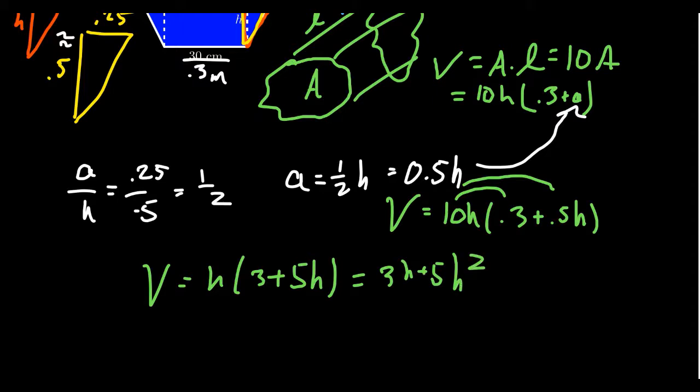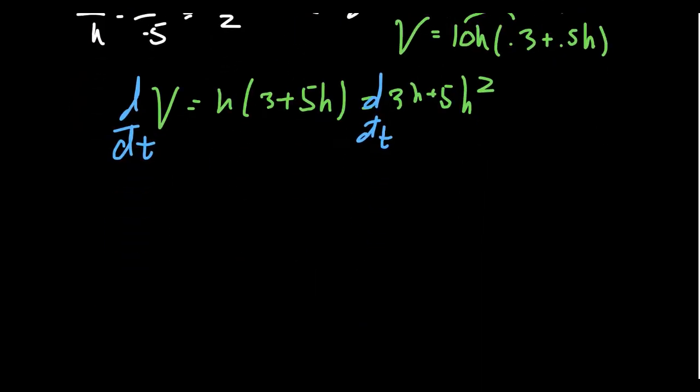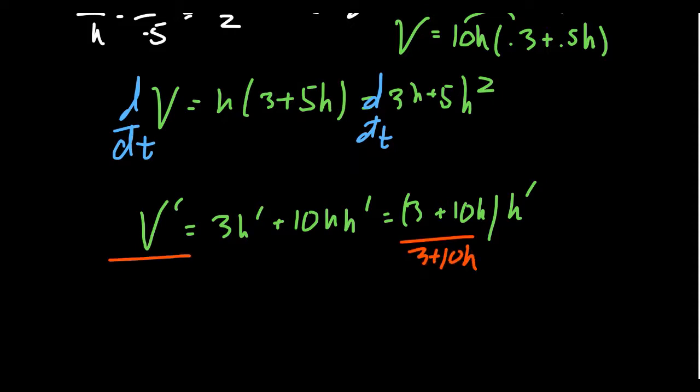We're now ready to take the derivative of both sides with respect to time, d/dt. So the derivative of volume is just V prime. And on the right-hand side, by the usual rules of derivatives, taking the derivative with respect to time, we're going to get 3H prime plus 10H times H prime. When you take the derivative of 5H squared, the outer derivative is 5 times 2H, giving us the 10H, and the inner derivative is H prime. I'm going to factor out the H prime because that's what we're trying to solve. If you divide both sides by 3 plus 10H, you then have solved for H prime. So H prime equals V prime over 3 plus 10H.